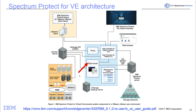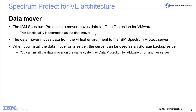We're also utilizing Spectrum Protect for VE when doing the Spectrum Protect Plus 10.1 integration. Of the full VE architecture, we're primarily concerned with the VStorage backup server and its data mover, which is used in conjunction with Spectrum Protect Plus. We won't be utilizing the file-level restore interfaces or web browsers. The data mover is critical because it's what actually moves the data from the VMware environment to the Spectrum Protect Server. In a multi-data mover environment, we use the first instance installed on your VStorage backup server.